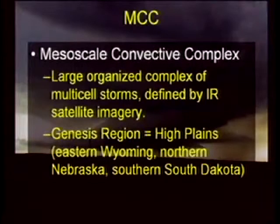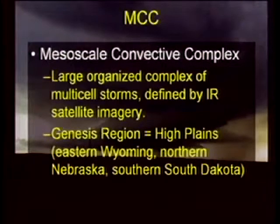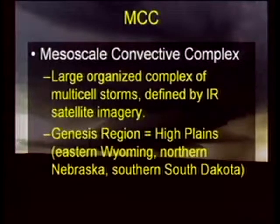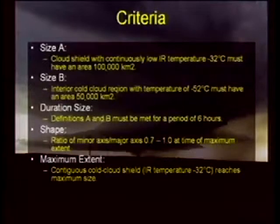The genesis region, or where the majority of MCCs begin, is considered the high plains of the United States — places like eastern Wyoming, northern Nebraska, southern South Dakota. However, MCCs can take place anywhere east of the Rocky Mountains. It doesn't necessarily mean they're only a high plains or a Midwestern type of storm system. We get these things down here in the southeast as well.